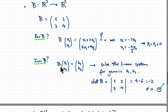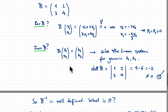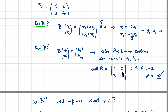Now let's look at the image of B. We want to know if, for any vector (b1, b2), we can find x1 and x2. That requires solving the linear system for generic b1 and b2. We saw previously that this is possible and yields a unique solution if the determinant of B is non-zero. The determinant is 1 times 4 minus 3 times 2, which is 4 minus 6, giving minus 2 — different from zero. So we're safe.